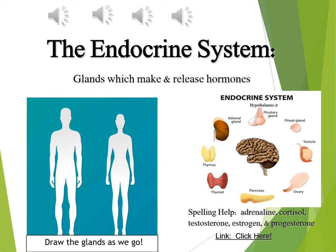Draw a shape in the brain and label the hypothalamus. The hypothalamus controls the pituitary — an extremely important job. Next to the brain, draw a little shape for the pituitary. The pituitary is sometimes called the master gland — think of the master cylinder of your car. The pituitary controls all the rest of the glands.